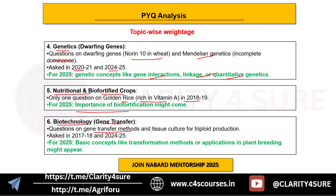Lastly, biotechnology and gene transfer: questions on gene transfer methods and tissue culture for triploid production were asked in 2017 and 2024. Biotechnology is a broad field but in this context it is less frequently tested. Still, basic concepts like transformation methods or applications in plant breeding might appear.